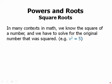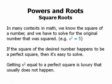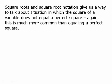Now we can talk about square roots. In many contexts in math, we know the square of a number and we have to solve for the original number that was squared. For example, we have something like x squared equals 5 and we need to find x. If the square of the desired number happens to be a perfect square, then it's easy to solve. Square roots and square root notation give us a way to talk about a situation in which the square of a variable does not equal a perfect square.